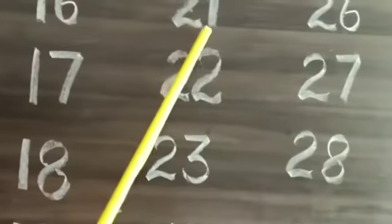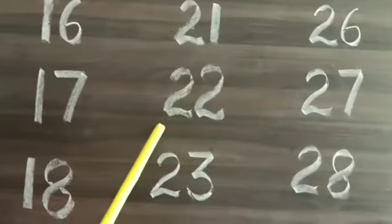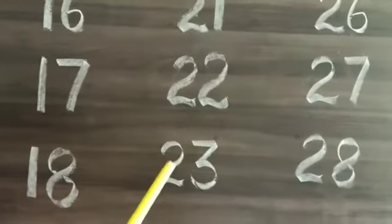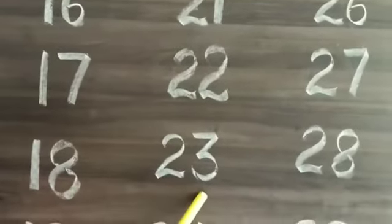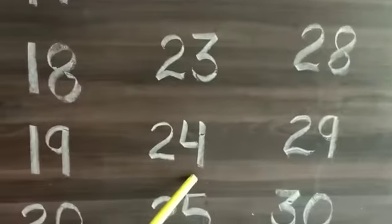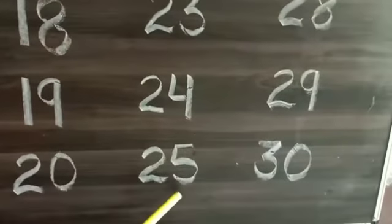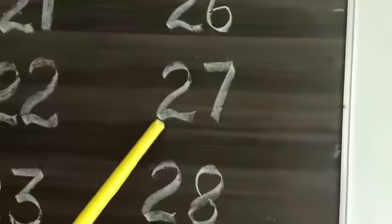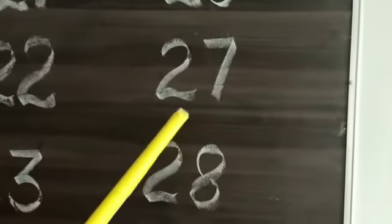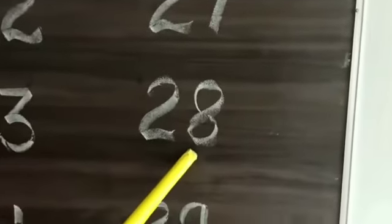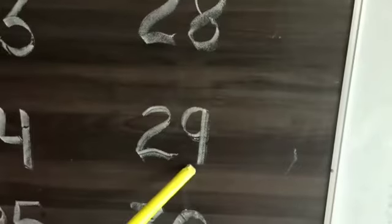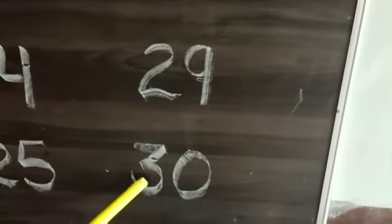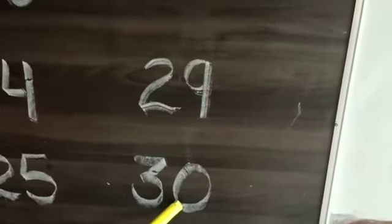2, 1, 21, 2, 2, 22, 2, 3, 23, 2, 4, 24, 2, 5, 25, 2, 6, 26, 2, 7, 27, 2, 8, 28, 2, 9, 29, 3, 0, 30.